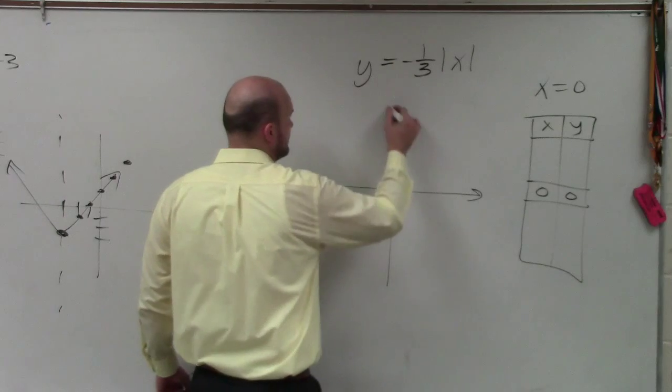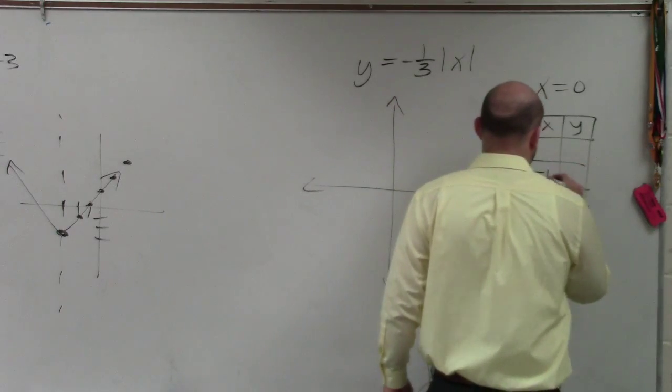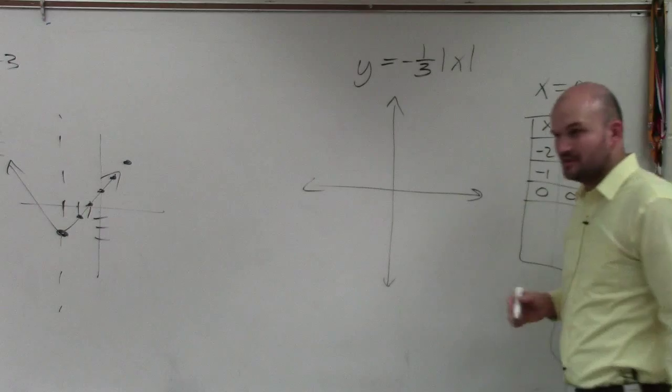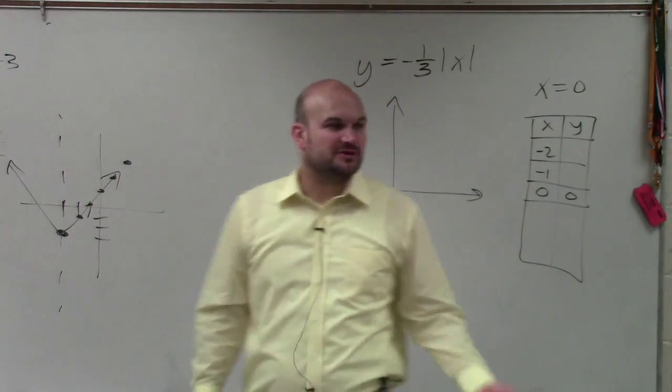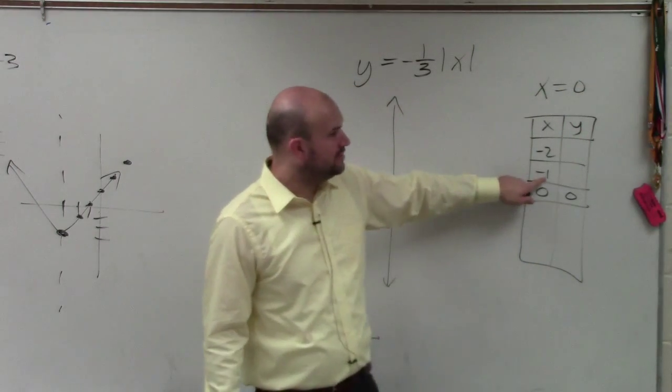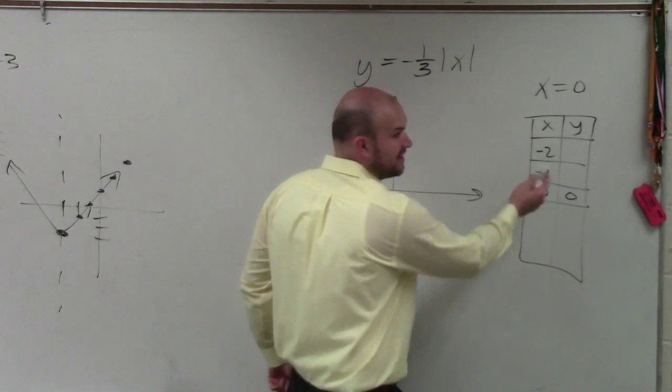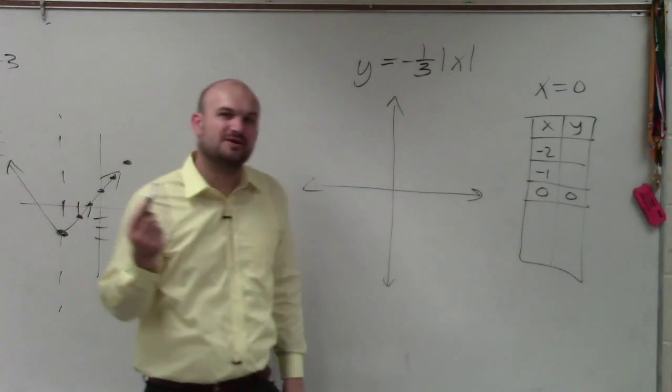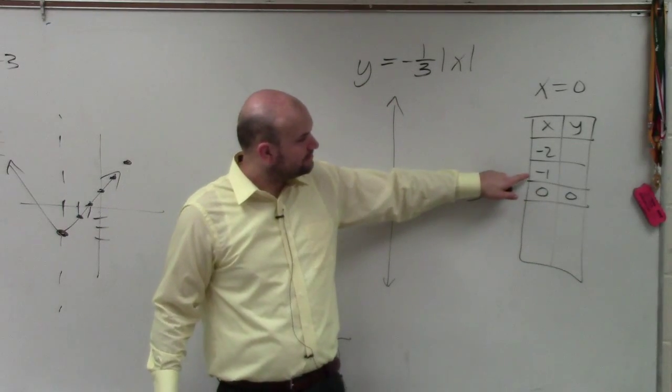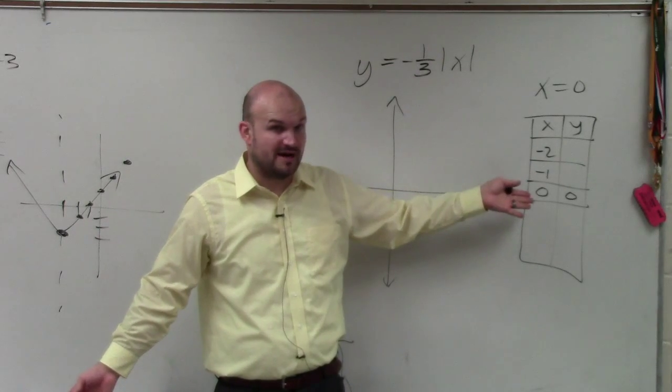Some of you might say, well, Mr. McLogan, you showed us to do negative 1 and negative 2, right? Well, if you do negative 1 and negative 2, you can pick points to the left and to the right. I'll kind of give you guys a hint, though. If you pick negative 1 and negative 2, which is perfectly fine, you pick points to the left and pick points to the right.